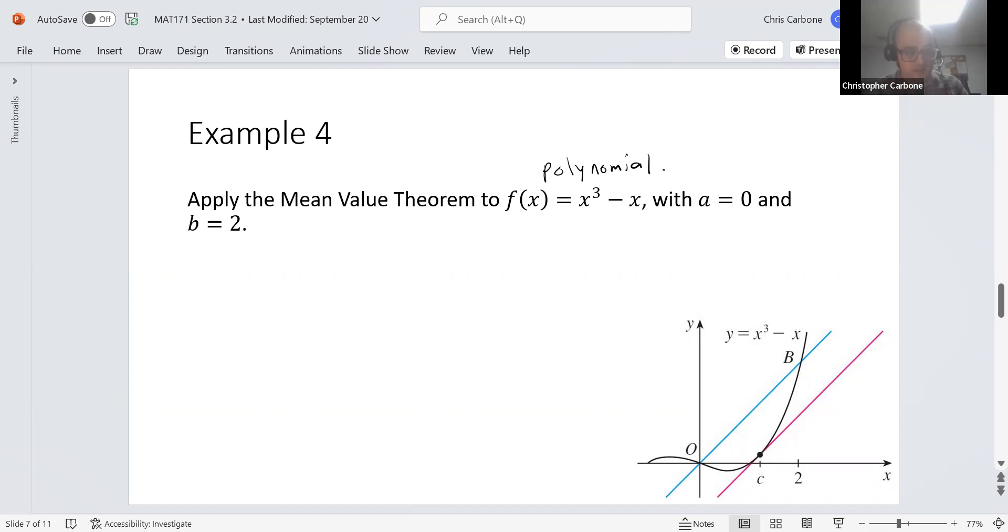For our Mean Value Theorem then, we need to solve this: f(2) - f(0) = f'(c)(2 - 0).